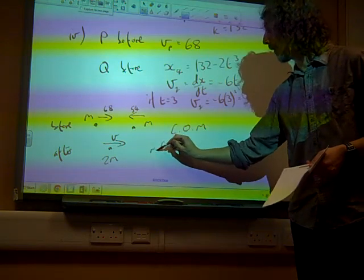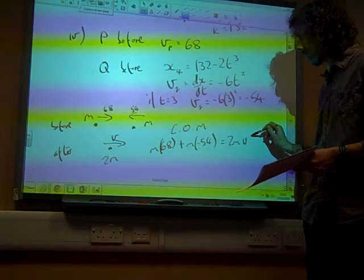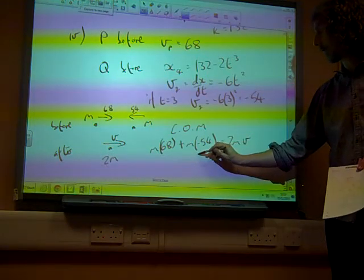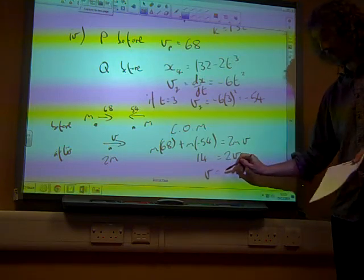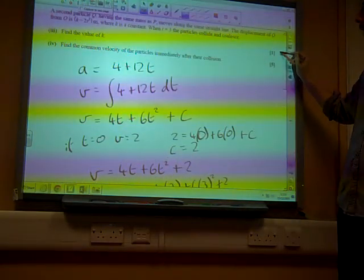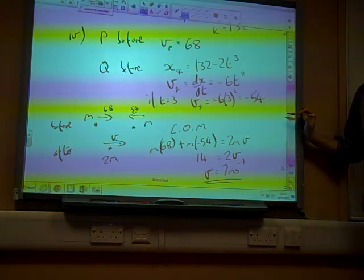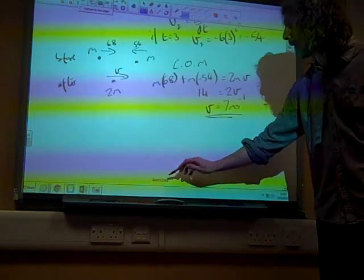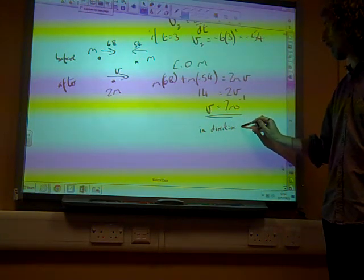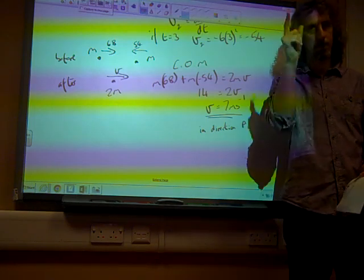So let's do my momentum equation, my conservation of momentum equation now. I've got m times 68 plus m times minus 54 is 2m times v. m is a common factor all the way through so divide by m. This leaves me with 14 as being 2v, so v is 7 meters per second. And I don't think we needed to particularly talk about direction. The common velocity of the particles immediately after the collision, I don't know, maybe it's there in our diagram, maybe to be absolutely thorough we should say 7 meters per second in the direction p was moving. But I think we probably don't need to. There we go, and that's question 6.